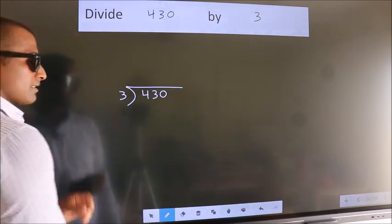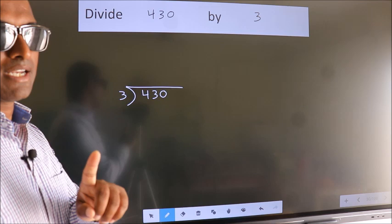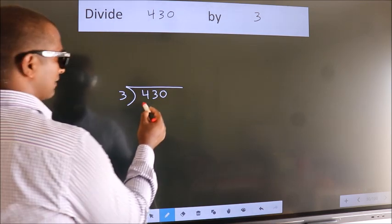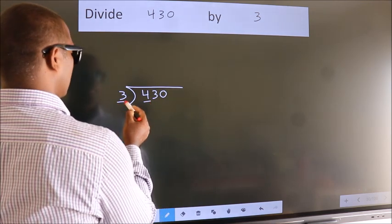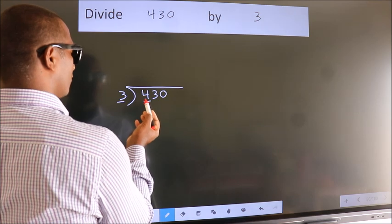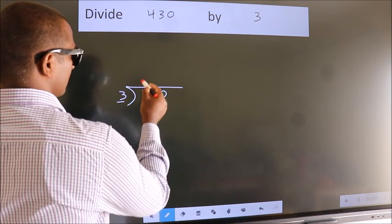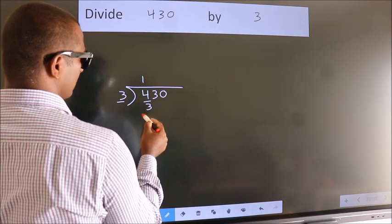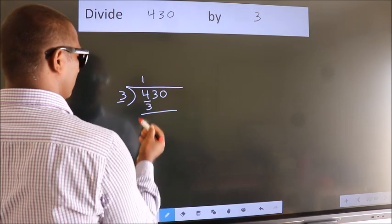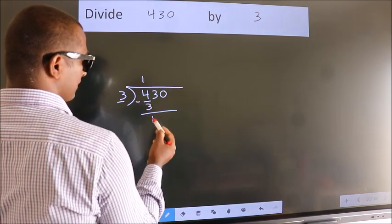This is your step 1. Next, here we have 4, here 3. A number close to 4 in 3 table is 3 once 3. Now, we should subtract. We get 1.